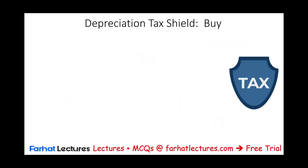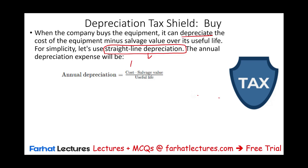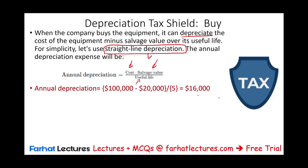The first thing we are going to compute is the depreciation tax shield. Because when we buy the asset, as I mentioned, it can be depreciated over five years. We're going to be using the straight-line method for simplicity. In the real world, if you're doing it for tax, you would use MACRS — Modified Accelerated Cost Recovery System. So what's the annual depreciation expense? It's the cost of the asset minus the salvage value, divided by the useful life. Taking the data we are given, the cost is $100,000 minus the salvage value divided by the life of the asset — every year we are going to have $16,000 of depreciation expense.